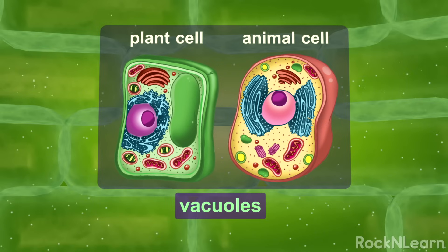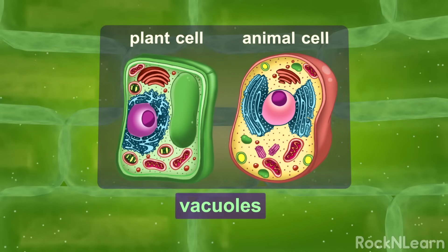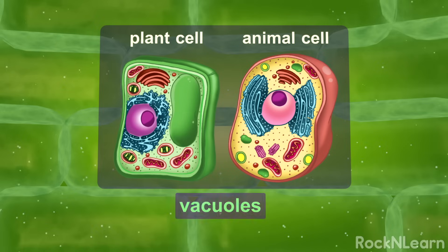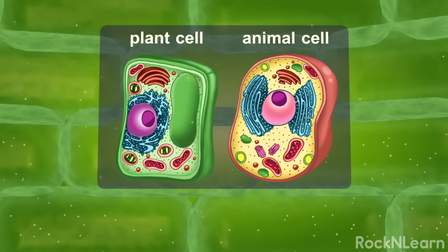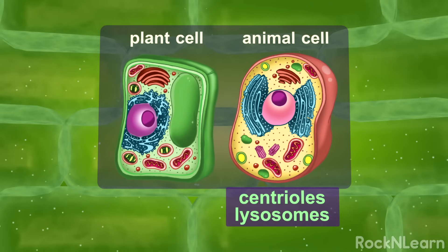Second, the vacuoles in the plant cell are larger than the vacuoles in the animal cell. And finally, the animal cell has centrioles and lysosomes. But this plant cell doesn't.